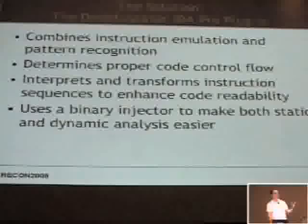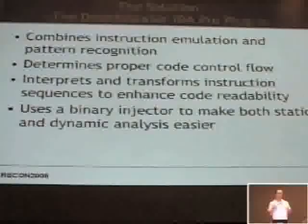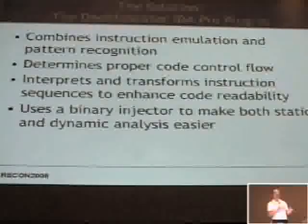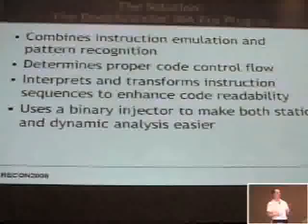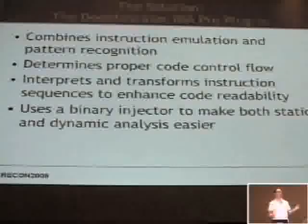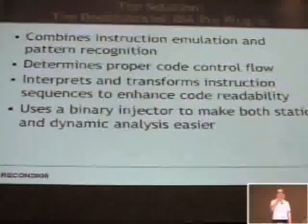Our solution is our deobfuscator plug-in. We combine emulation techniques — we can emulate math operations and things going on in the stack — on a case-by-case basis. We find the beginning of a pattern and then emulate until that pattern no longer matches, then move on to the next set of instructions and look for more patterns. We try to determine the proper control flow by getting rid of anti-disassembly, and we transform the instructions to enhance readability for both static and dynamic analysis. In dynamic analysis, it's easy to see where code goes when the jumps go to the proper place the first time.